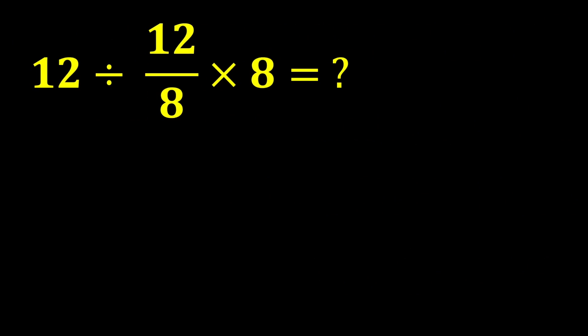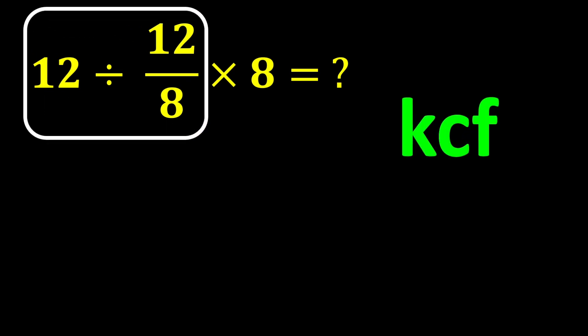Now let's solve the question from the beginning of the video: 12 divided by 12 divided by 8, multiplied by 8. In this expression, we have both multiplication and division. Moving from left to right, we first encounter the division, so we perform it first: 12 divided by 12 over 8. To solve this part, we use the KCF rule: K stands for keep, C stands for change, and F stands for flip.